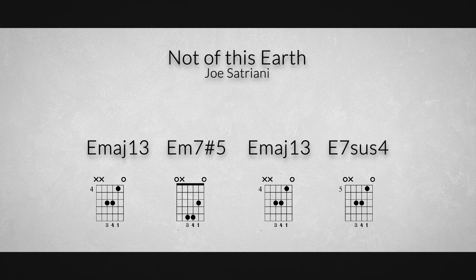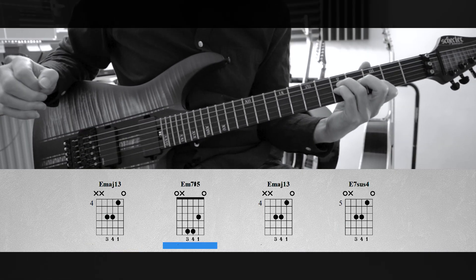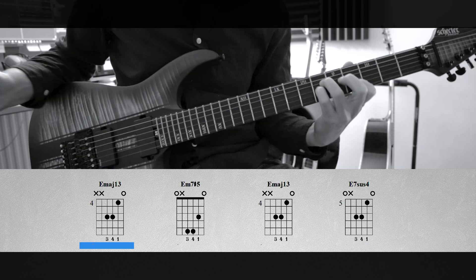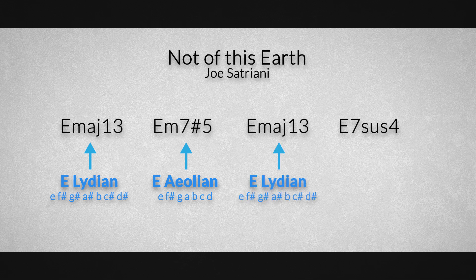This pitch axis composition technique is used by Joe Satriani in the song 'Not of This Earth,' where the chords E major 13, E minor 7 sharp 5 (which is in fact C added 9 with an E in the bass), E major 13, and E7 sus 4 are all connected by the pitch axis note E. These chords rotate while Joe plays the associated modes: E Lydian over E major 13, E Aeolian over C added 9 with an E in the bass, E Lydian over E major 13, and E Mixolydian over E7 sus 4.